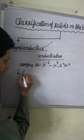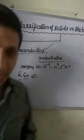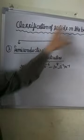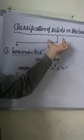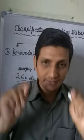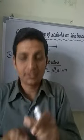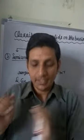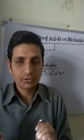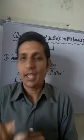Students, I hope you can understand the classification of solids on the basis of conductivity easily, because you have to learn only three points: number one conductors, number two insulators, number three semiconductors. I hope you can understand this lecture. If you have any problem, write in the comment box, like this video, share this video, subscribe to my channel. Thanks for watching.